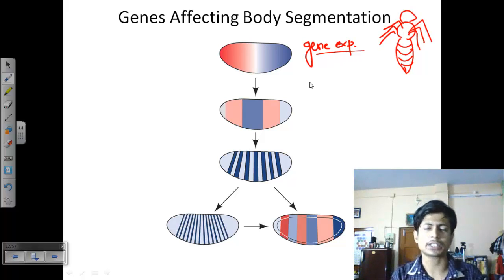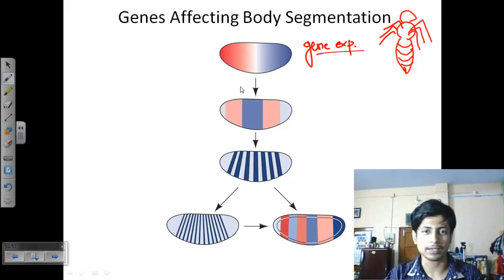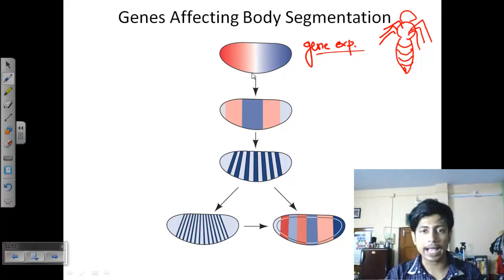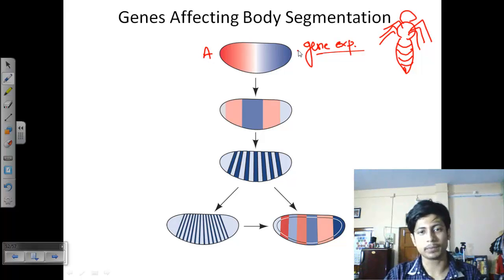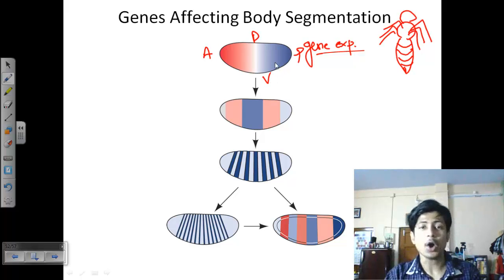Multiple genes work together, interacting through their gene products, to produce a segmented body condition for the insect. At the very beginning, the insect larva needs to determine which part is anterior, which is posterior, which is ventral, and which is dorsal. Body axis determination is a very important task in the fruit fly.